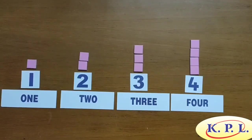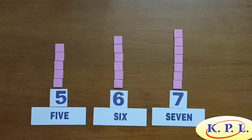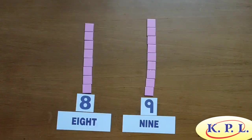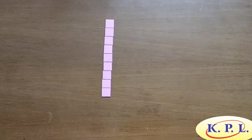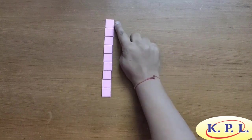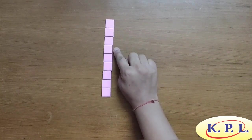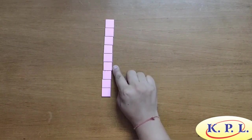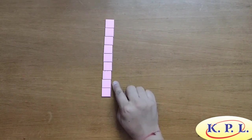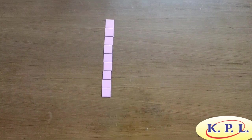Similarly, we can represent digit 1 to 9 like this. Let us count these 1's units: 1, 2, 3, 4, 5, 6, 7, 8, 9. These are 9 units.